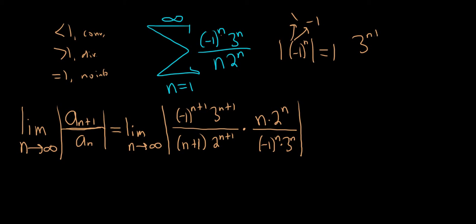We can write the numerator as 3 to the n times 3 to the 1. And on the bottom, we still have 3 to the n. The 3 to the n's cancel, and we're left with the 3. So let's go ahead and write that down.